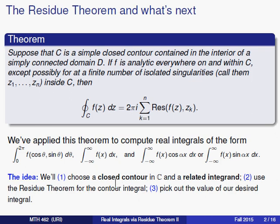We chose a closed contour in the complex plane based on what we saw in the integral, and we chose an integrand to integrate along that contour, again based on what we saw in the real integral we were trying to handle. There were a few hints to use in choosing a contour and/or an integrand. But once you had chosen this contour and integrand, you wanted to evaluate the contour integral using the residue theorem. And then finally, we wanted to see how the value we had computed for the complex integral related to the real integral. Please go ahead and review those past videos if you'd like.